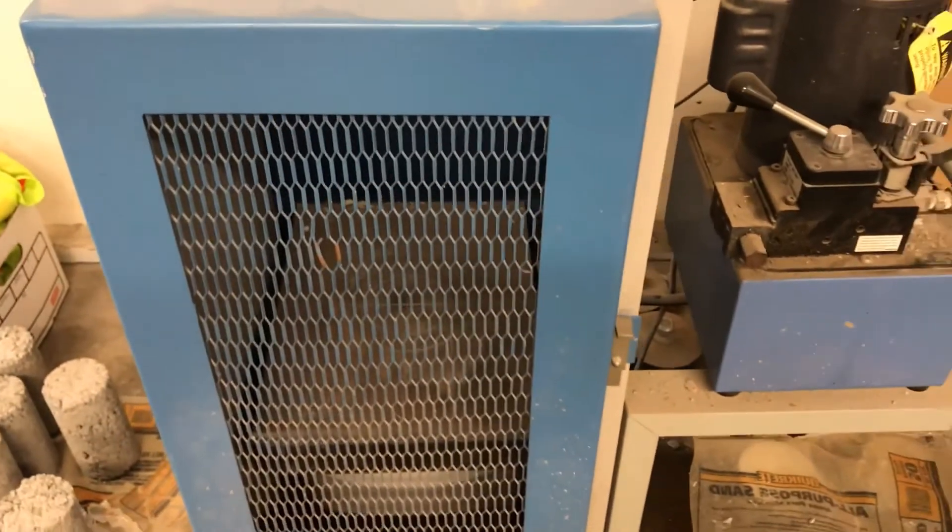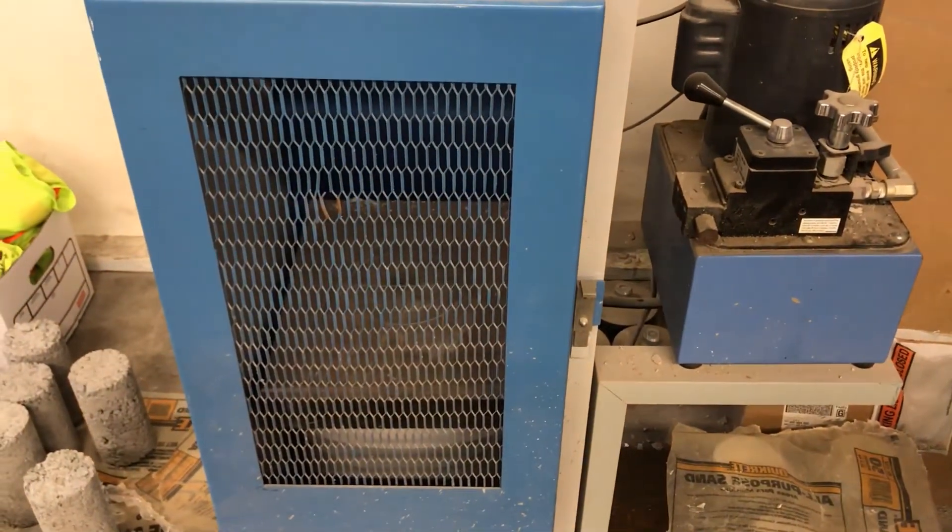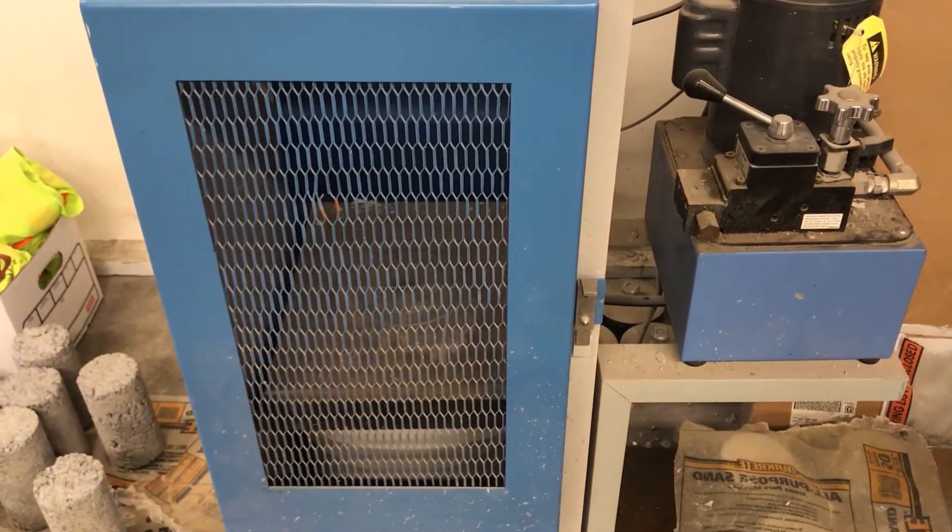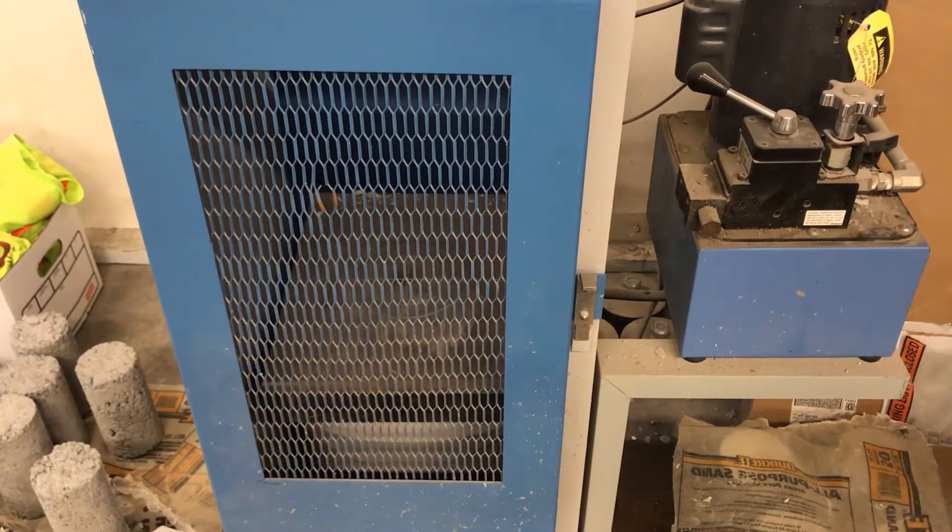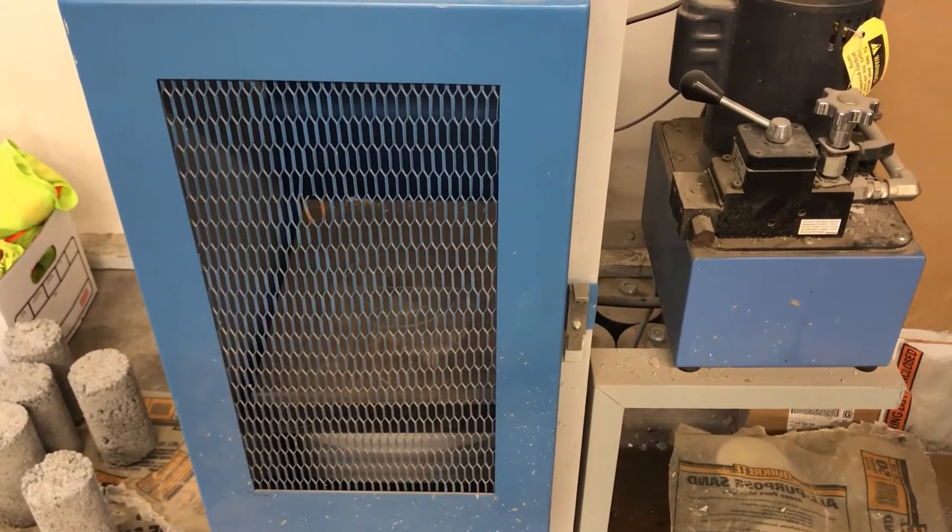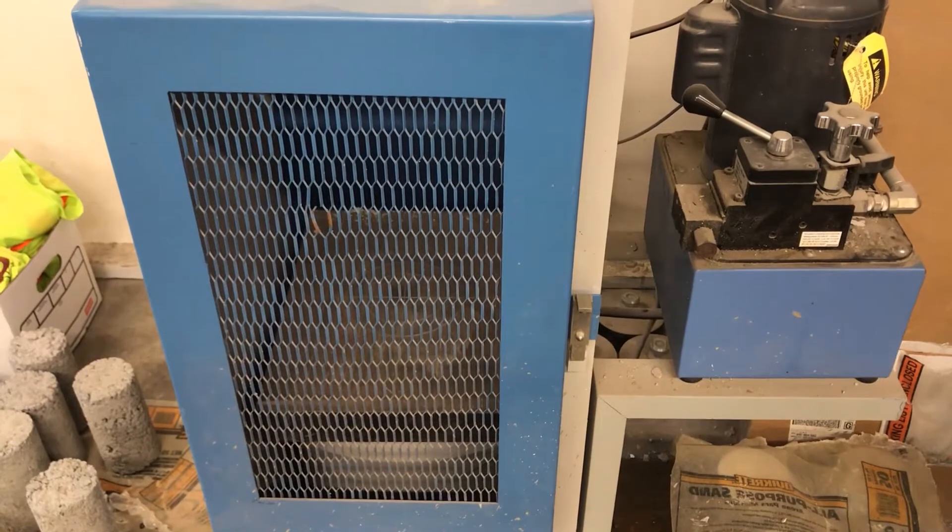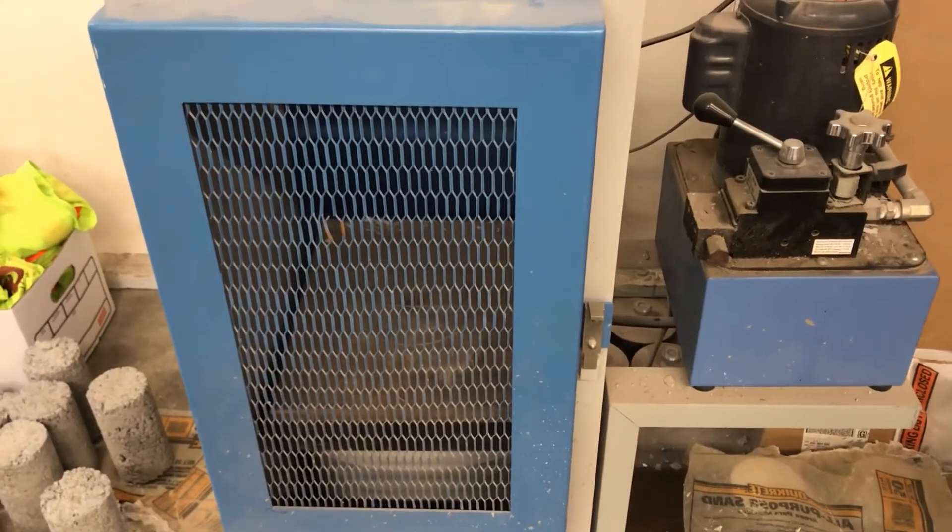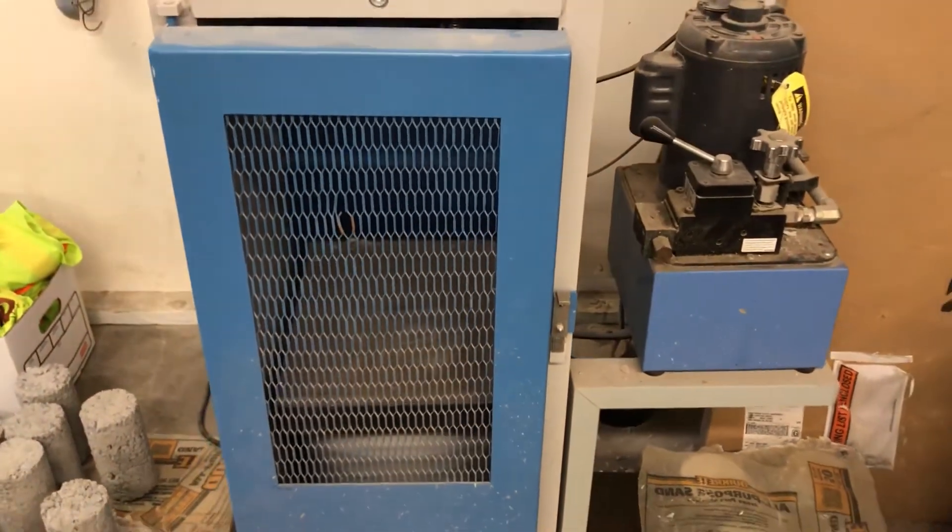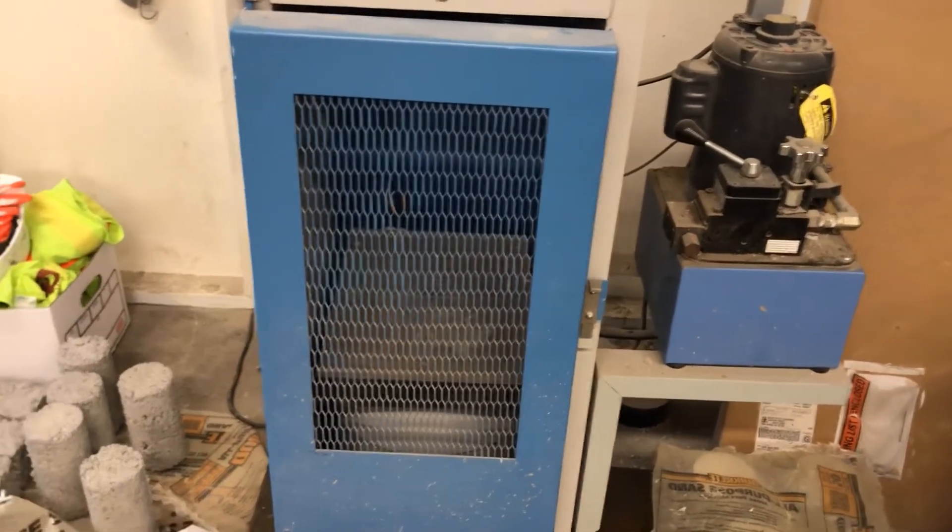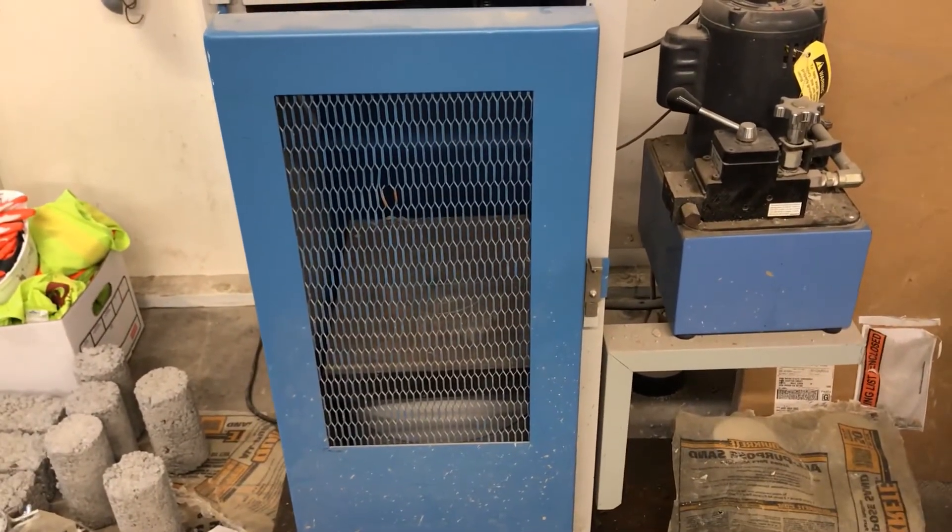Well, sometimes when these cylinders finally break, they break pretty catastrophically, meaning that there's shards of concrete flying. And so the cage protects us from the concrete shrapnel. So that's another advantage of using this machine is that we've got this cage that protects us from flying shrapnel.